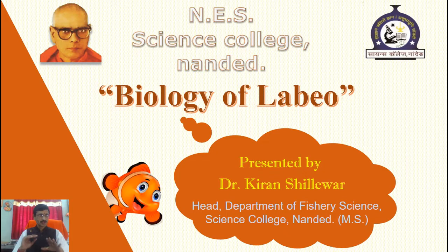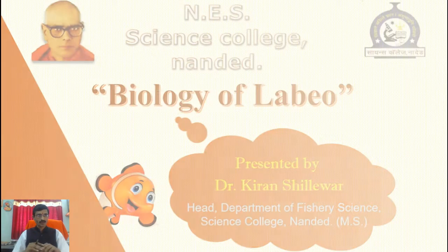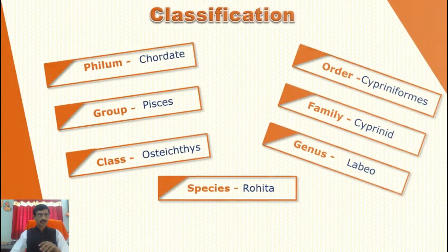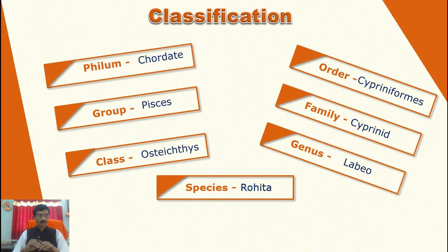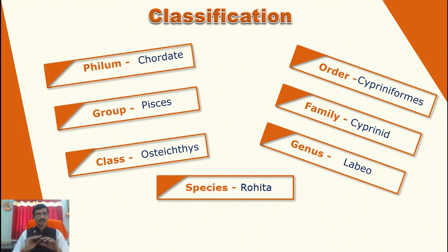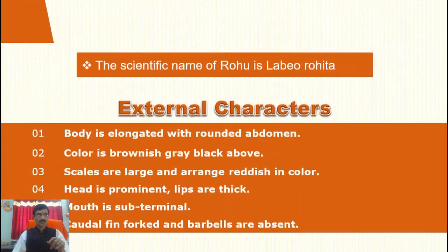One fish we will see today is Labeo, that is Rohu. Biology of Labeo — first, the classification of Labeo: Phylum Chordata, Group Pisces, Class Osteichthyes, Order Cypriniformes, Family Cyprinidae, Genus Labeo, and Species rohita. This is the classification of the fish.